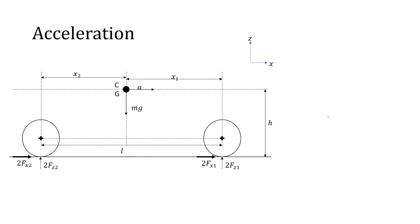Moving to the next diagram, it's similar to the previous one but with a few more variables. 'a' is defined as the acceleration of the car in the x direction. 2Fx1 and 2Fx2 are the reaction forces acting on the ground by the front and rear wheels, which produce this acceleration and cause the vehicle to move in the forward x direction.